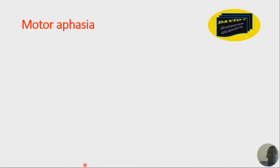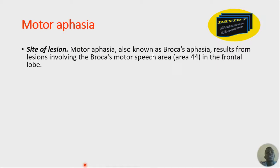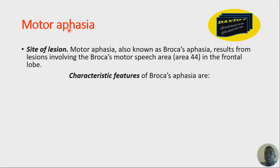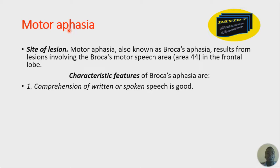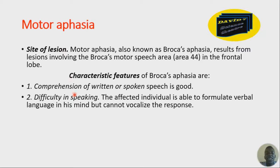Let's talk about motor aphasia. In motor aphasia, the site of lesion is Broca's area — Broca's motor speech area — which is area number 44 in the frontal lobe. When there is a lesion of Broca's area, what you get is motor aphasia. Characteristic features: one, comprehension of written or spoken speech is good. Two, there is difficulty in speaking. The affected individual is able to formulate verbal language in his mind but cannot vocalize the response.